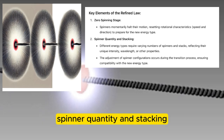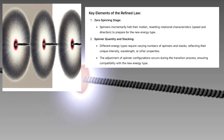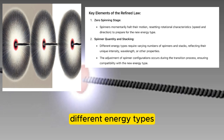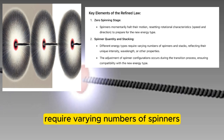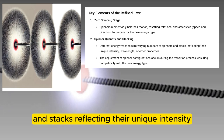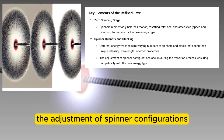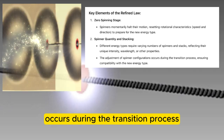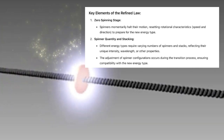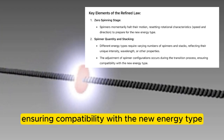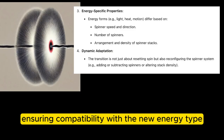Spinner quantity and stacking: different energy types require varying numbers of spinners and stacks, reflecting their unique intensity, wavelength, or other properties. The adjustment of spinner configurations occurs during the transition process, ensuring compatibility with the new energy type.